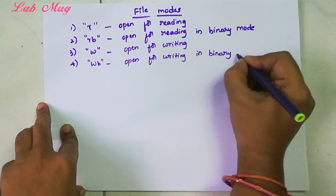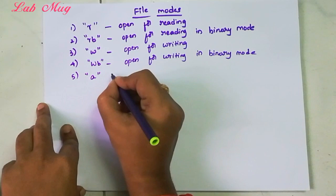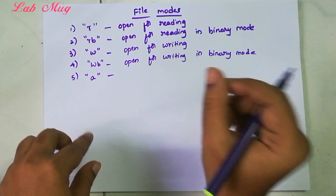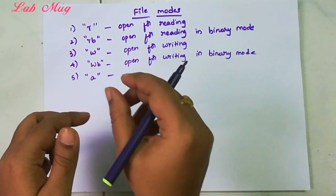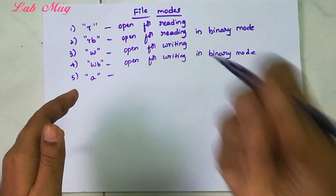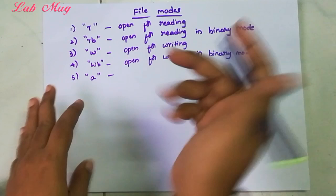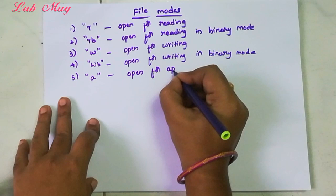Next one is A. What is A? R means read, W means write, but A means append. Append means add. R means we read already existing content, W means we write, but A means we erase the existing content and add new content. We call this append. So append means adding - open for append.